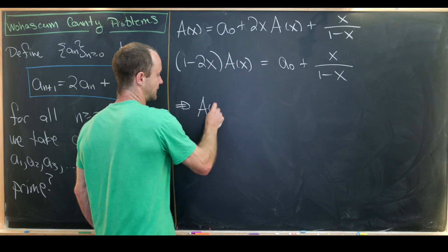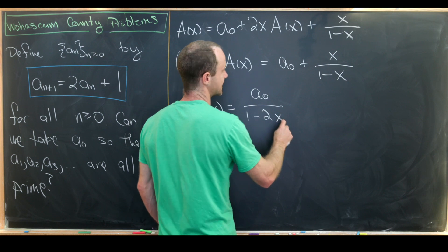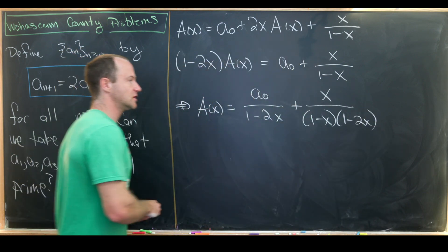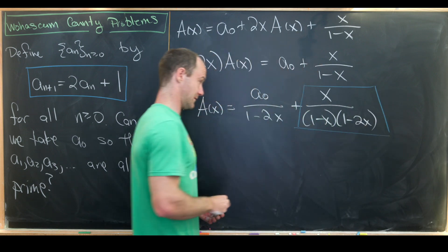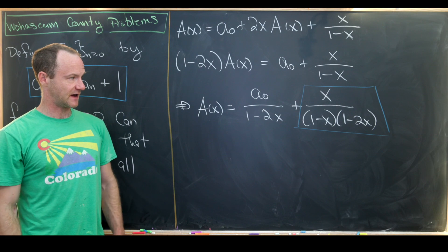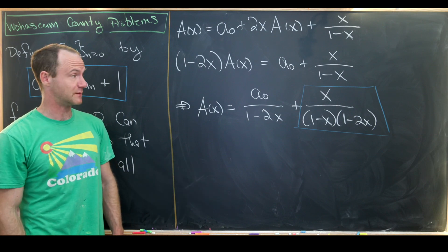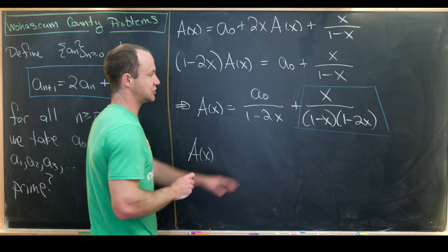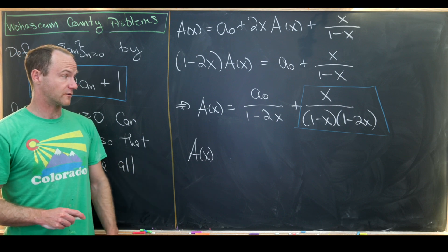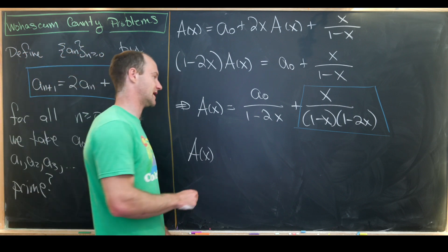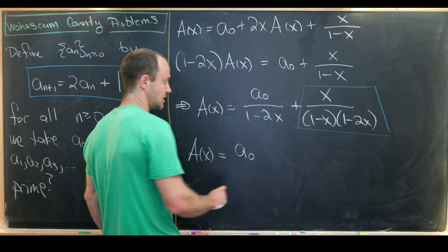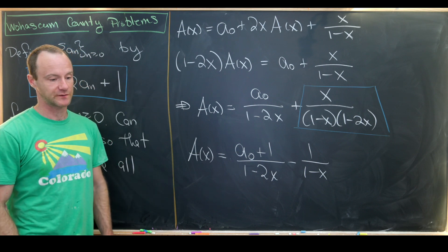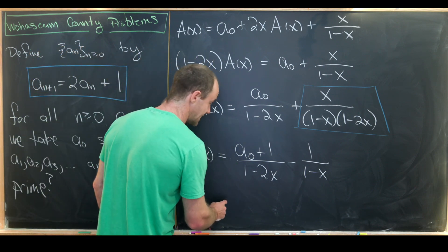That gives us a rational form: a(x) equals a_0 over (1 - 2x) plus x over [(1 - x)(1 - 2x)]. Looking at that second term, motivated by calculus, we use partial fraction decomposition. Doing a standard partial fraction decomposition, we can split it into 1 over (1 - 2x) minus 1 over (1 - x). Putting it all together: a(x) equals (a_0 + 1) over (1 - 2x) minus 1 over (1 - x).